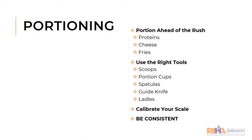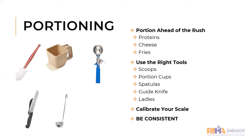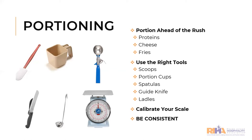Using the right tools and ensuring they work correctly is important. If you use a scale but it was not calibrated, it's not accurate. Using scoops, portion cups, spatulas, guide knives, ladles, and calibrating your scales — you're already on your way to success. While it is ideal to portion as much as you can, some items are just not cost-effective to have pre-portioned. These items are typically low cost and would actually cost more in labor than to just have a utensil on the line, such as mashed potatoes and ice cream scoops — we keep those on the line and measure as we go.